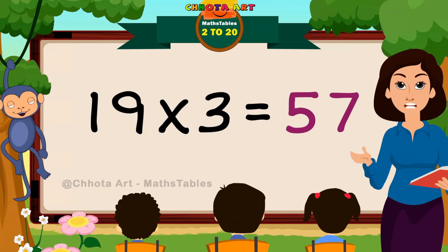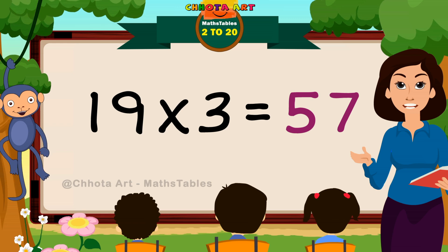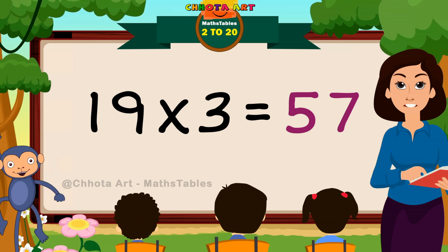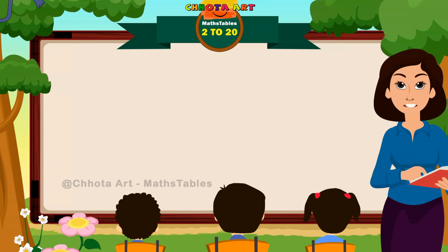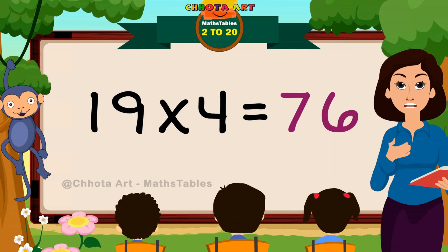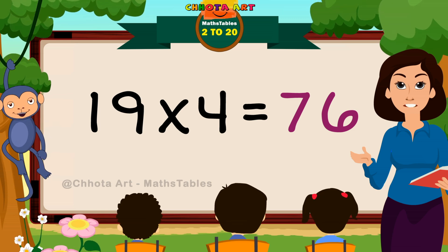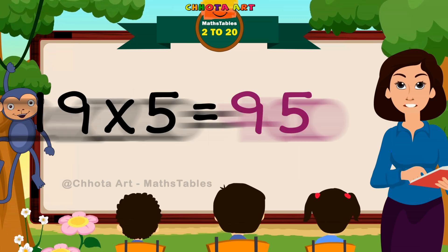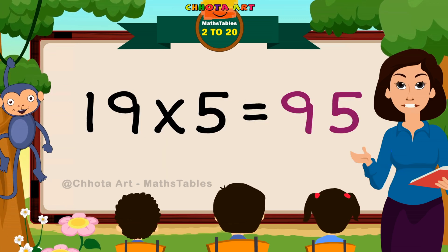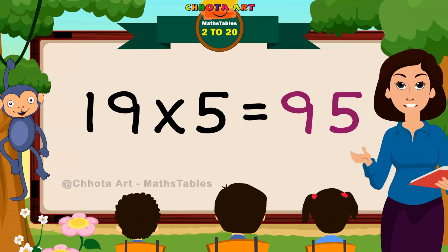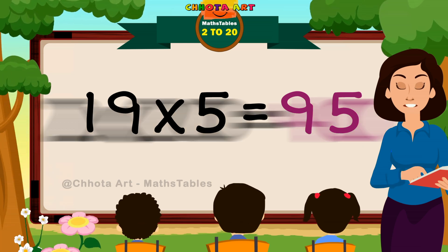Nineteen threes are fifty seven. Nineteen fours are seventy six. Nineteen fives are ninety five.